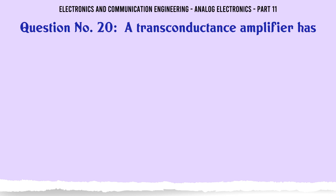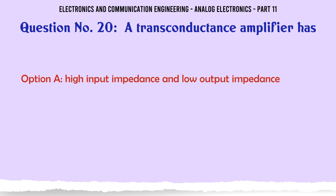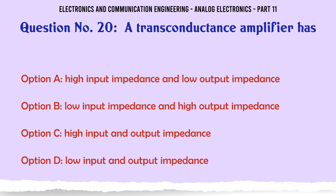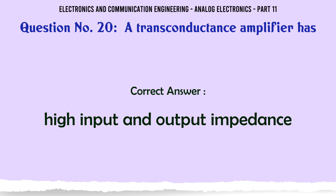A transconductance amplifier has. A. High input impedance and low output impedance. B. Low input impedance and high output impedance. C. High input and output impedance. D. Low input and output impedance. The correct answer is provided.